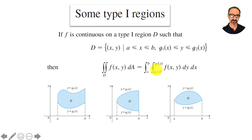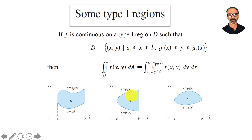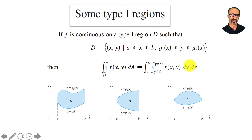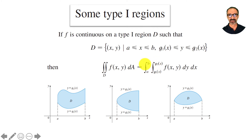Because it says g1 of x and g2 of x, once you finish the inner integral your result will be a function of x, ready for the next integration. When you go dy first, put an arrow to remind yourself you're integrating with respect to y — that's type one. For the outer dx integral, the limits are constants from a to b.